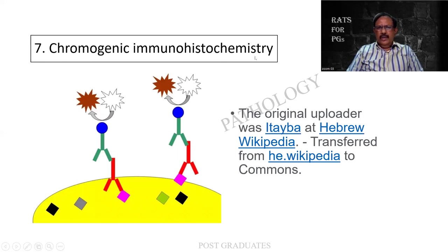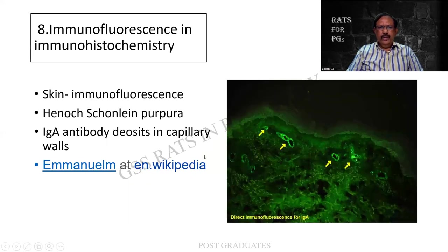Chromogenic immunohistochemistry is this. This is a particular picture taken from Wikipedia to show that there are two types of these antigens. One is a surface antigen, another is intracytoplasmic, or it can be an organelle antigen, to which you find an antibody is formed, and then there is a secondary antibody and a coloring chromogen. Also, as I mentioned earlier, immunofluorescence - this is a skin biopsy, and you find that there is fluorescence that has been attached, which can be identified. A case of Henoch-Schönlein purpura, wherein the IgA antibody gets deposited on the capillary walls.